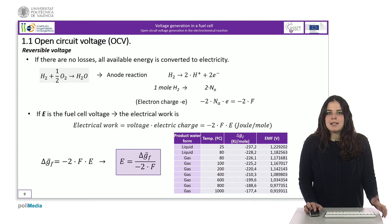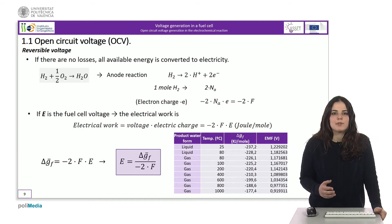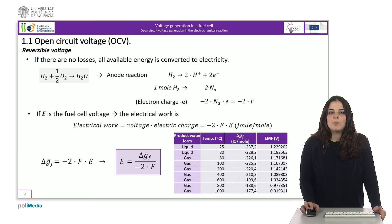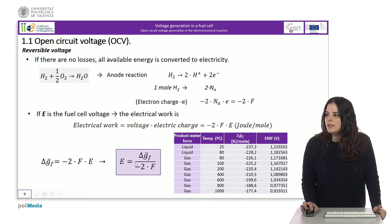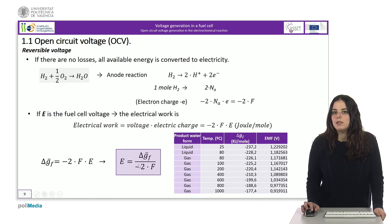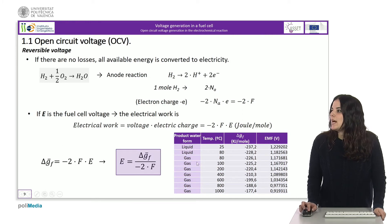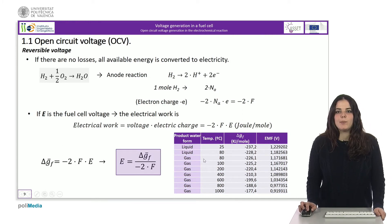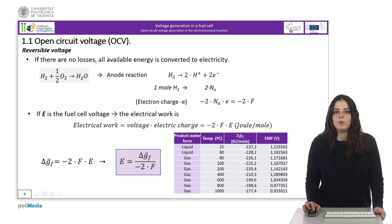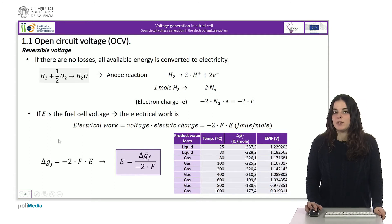This electrical work is the one that can be done with the Gibbs energy defined previously. So, by isolating the voltage, the calculation will be equal to that shown in this equation. As we can see in the table, for each temperature the voltage generated will be different, and it decreases as the temperature increases.